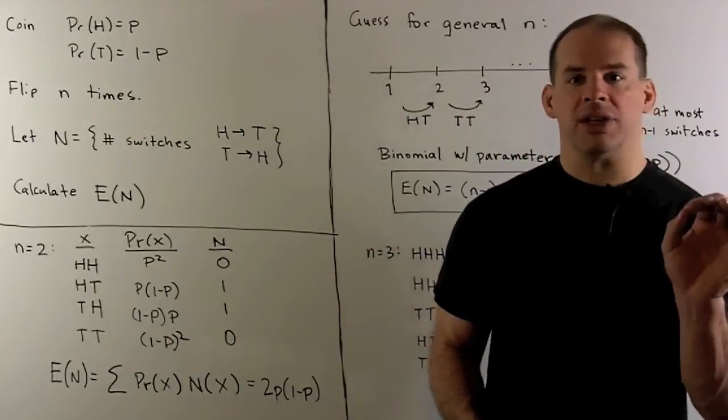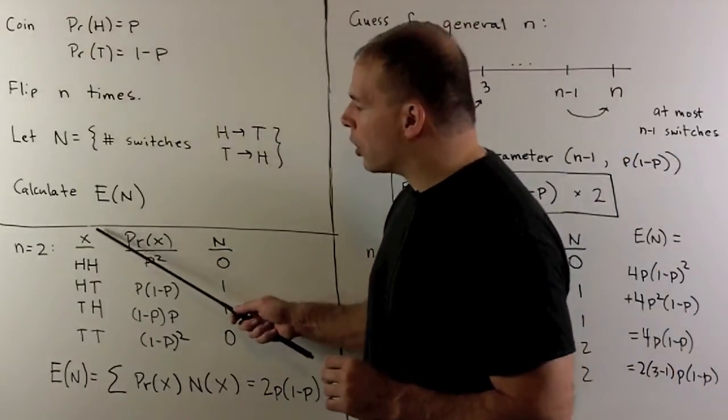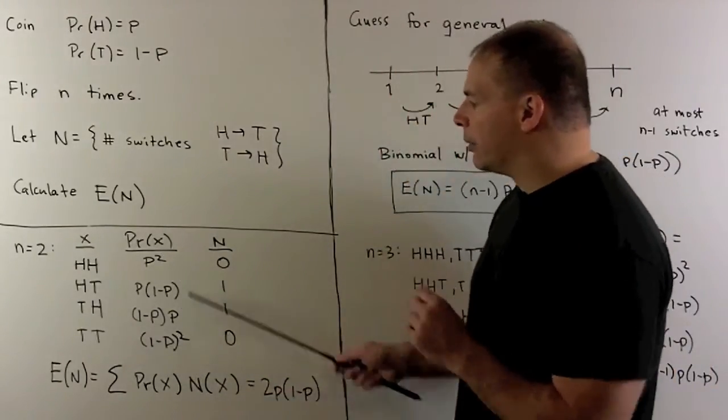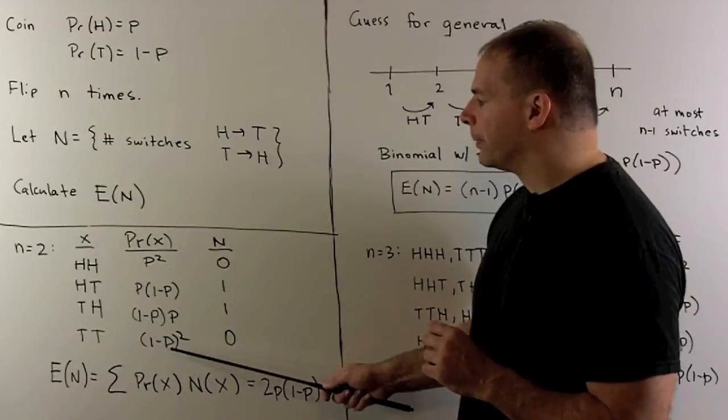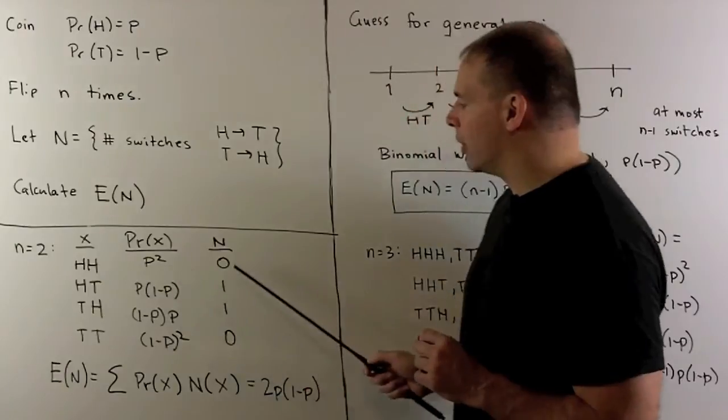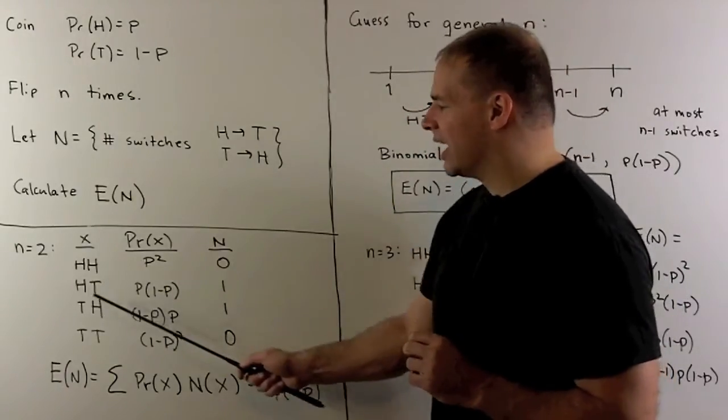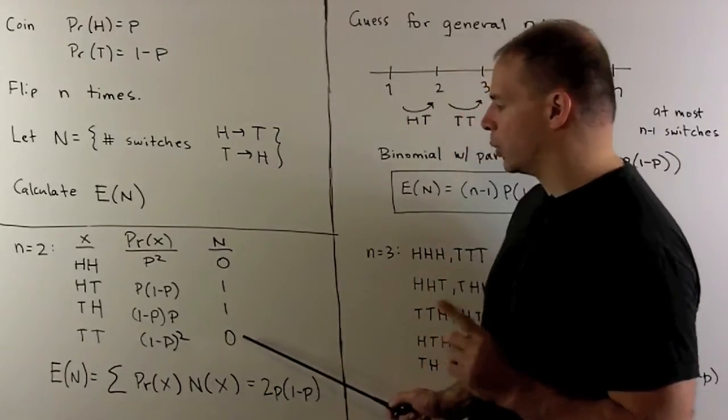Now, simple case, start with two flips. I'll record all possible outcomes. We'll have the probability for each outcome. Then we note, if I go from heads to heads, we have zero switches. Heads to tails, one switch. Tails to heads, one switch. Tails to tails, no switch.